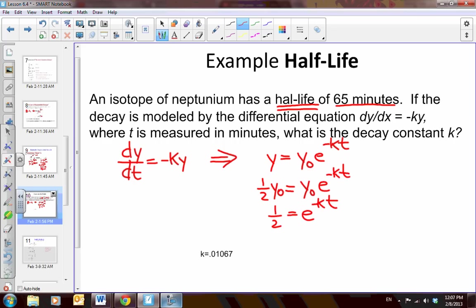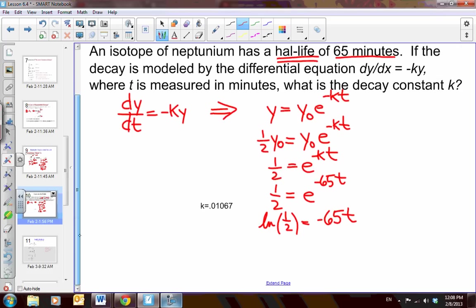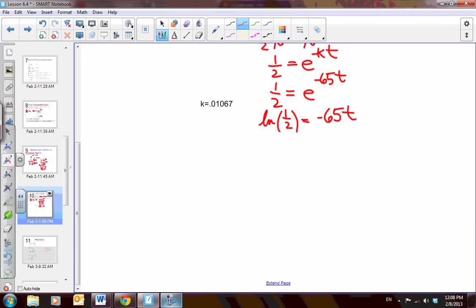And I'm given that in 65 minutes. So, if I substitute 65, 1 half equals e to the negative 65t. And then I would take the natural log of both sides. The natural log of 1 half is equal to negative 65t, because natural log and e undo each other. And then I divide by negative 65, so I get the natural log of 1 half divided by negative 65 is equal to t. Well, I'm going to do some work with my natural log to simplify this a little bit.